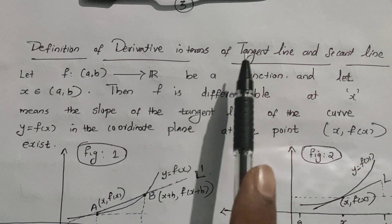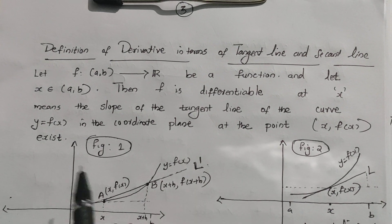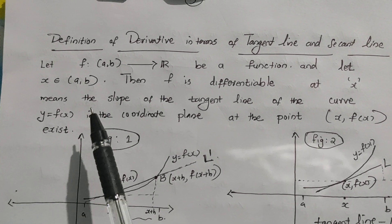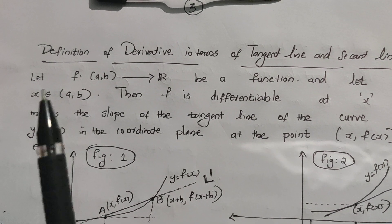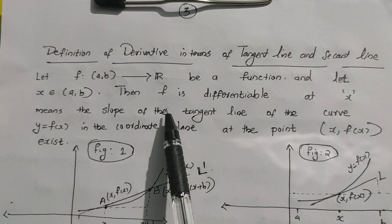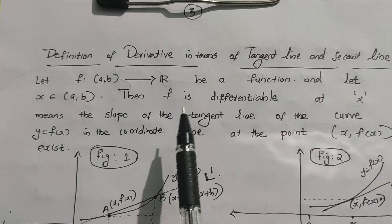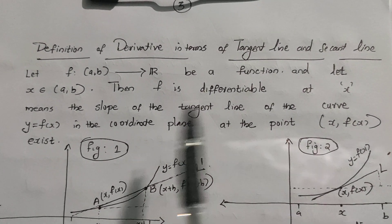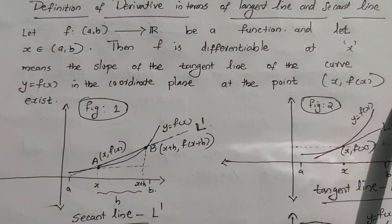The definition of the derivative in terms of tangent line and secant line. You are given a function f defined on an open interval (a,b) which is real valued, and let x be any interior point of open interval (a,b). Then what is the differentiability at x? The differentiability of f at x means the slope of the tangent line of the curve y = f(x) in the coordinate plane at that point (x, f(x)) exists.